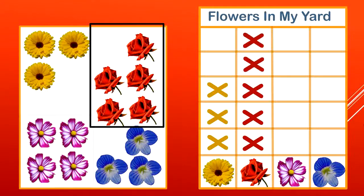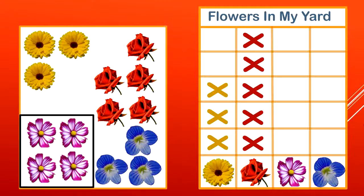Excellent. How about purple flowers? One, two, three, four. Do you see how I'm filling in the information in this bar graph from bottom to top? It's so easy.